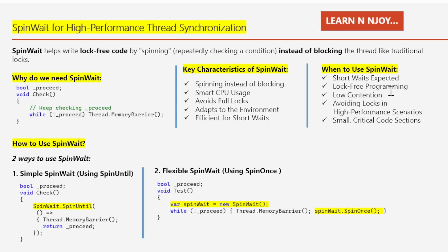Number three: low contention — SpinWait is ideal when there is low contention, meaning few threads trying to do the same thing at the same time. When only a few threads are involved, SpinWait works well because the chances of waiting too long are small. For example, one or two threads sharing access to a resource like reading from a shared cache. Number four: avoid locks in high-performance scenarios — SpinWait is good where locking would slow things down; locks introduce context switches which are more costly for the CPU than just spinning for a short period.